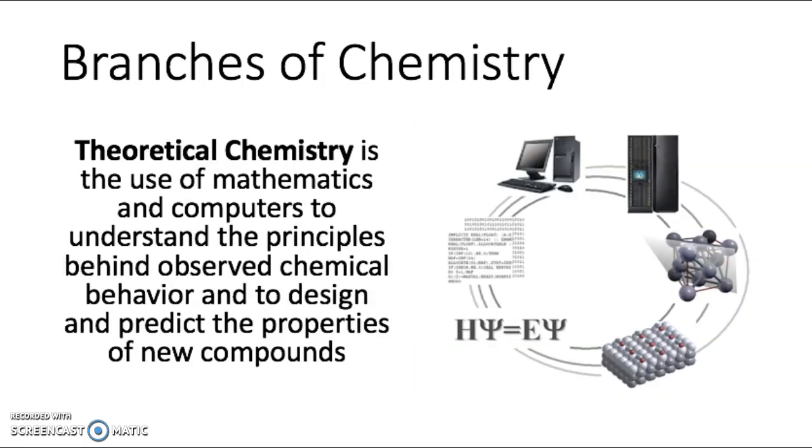The final branch of chemistry is theoretical chemistry, and theoretical chemistry uses mathematics and computers to understand the principles behind observed chemical behavior and to design and predict the properties of new compounds.